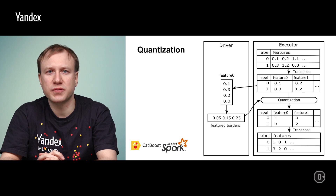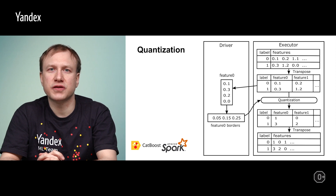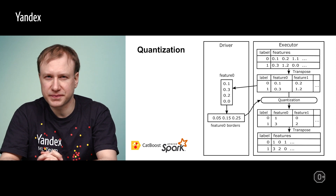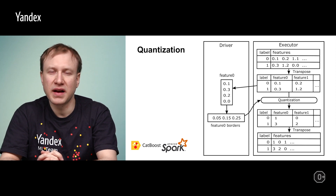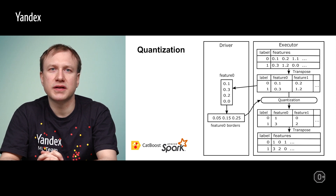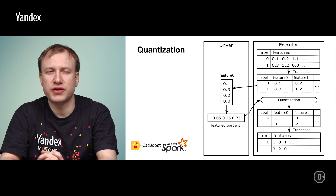Pre-transposing memory is required for the quantization process to be performed efficiently. This transposition to and from requests additional memory for executors, so make sure to request it. Finally, double values from the source vector are transformed to bin indices — typically the storage will take only 8 bits or 1 byte for each value.